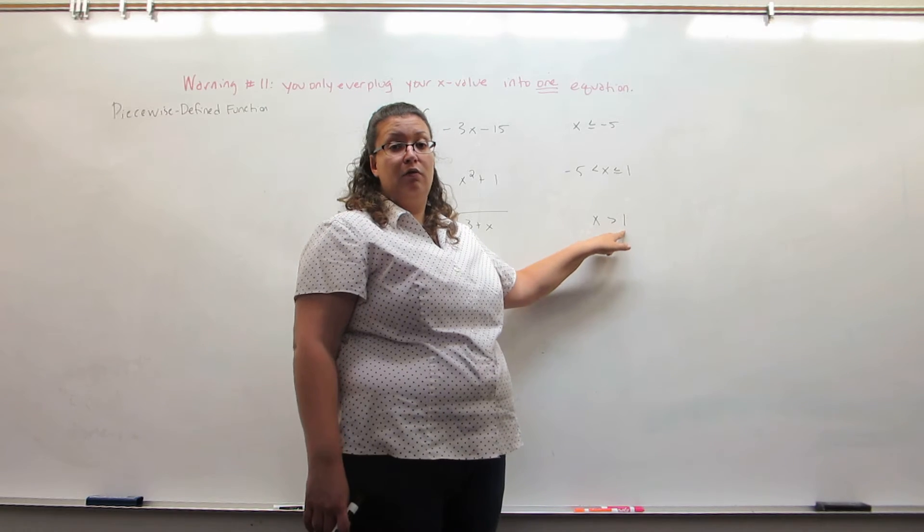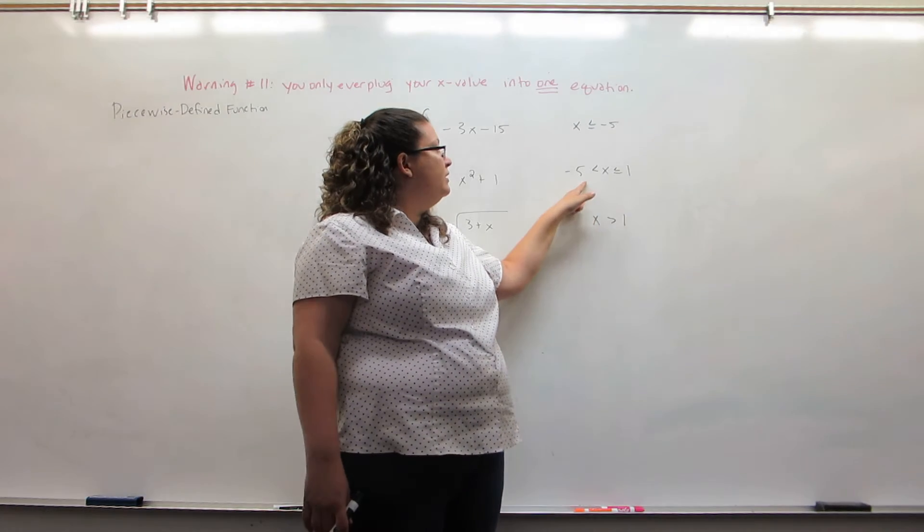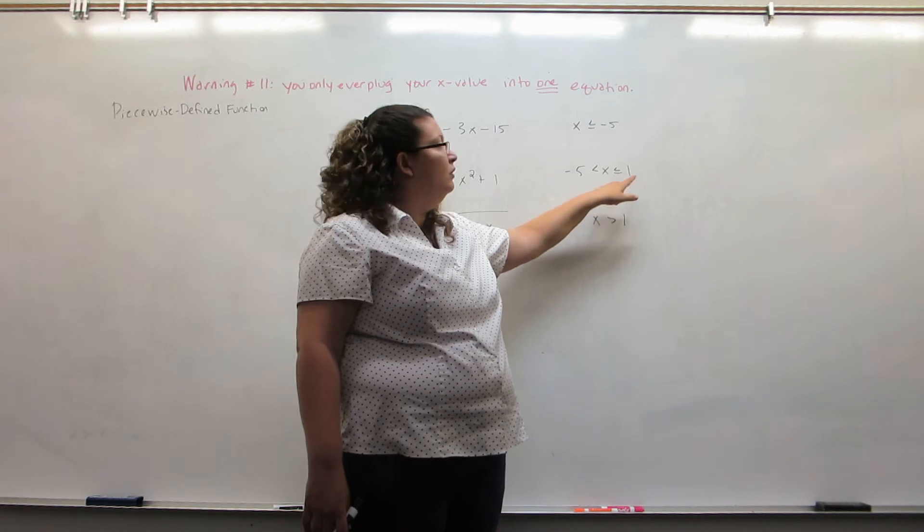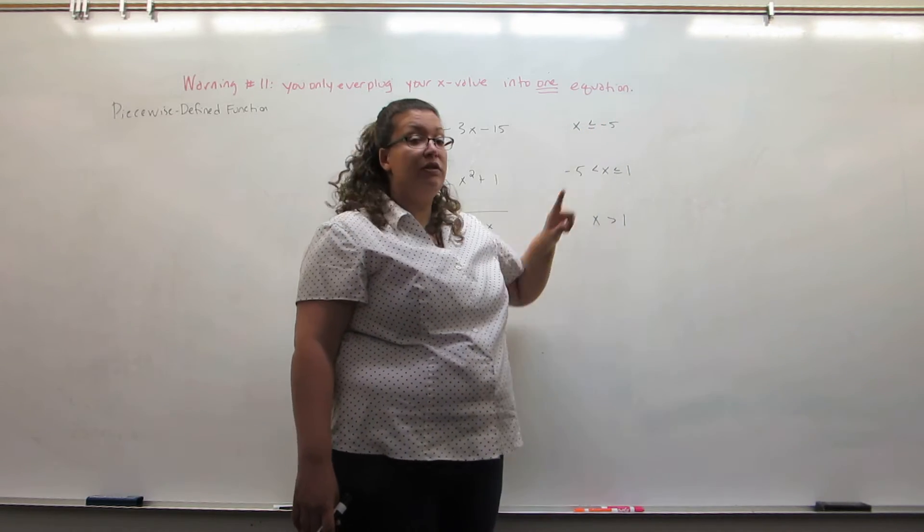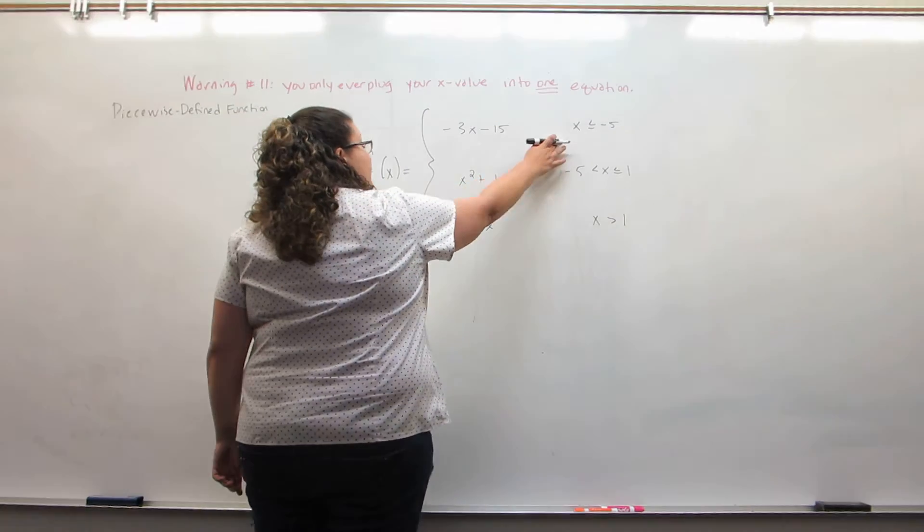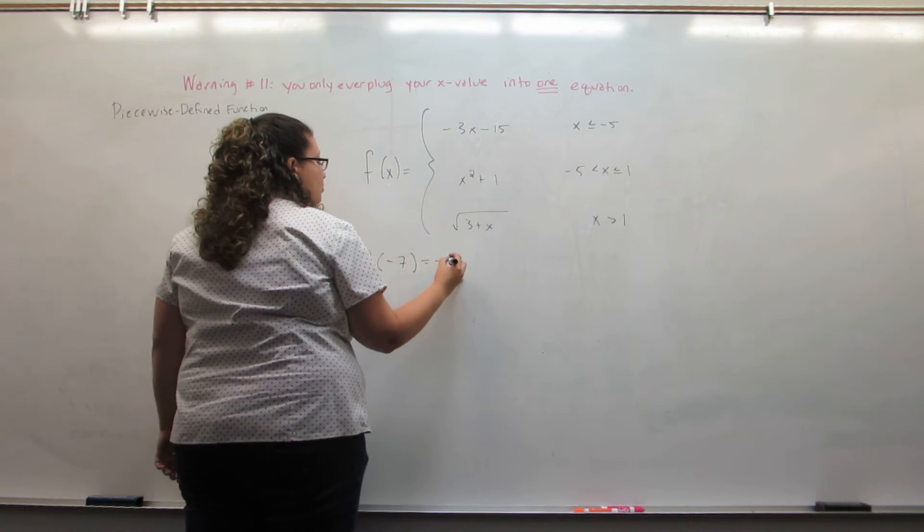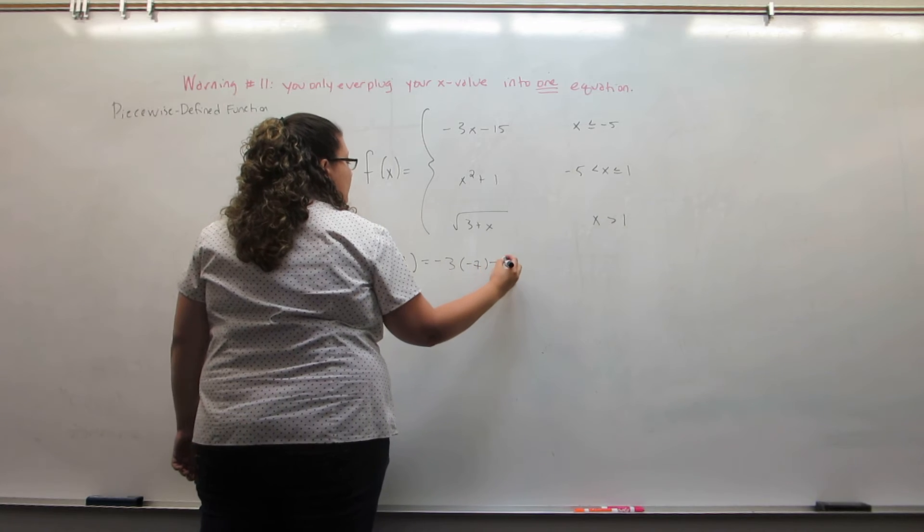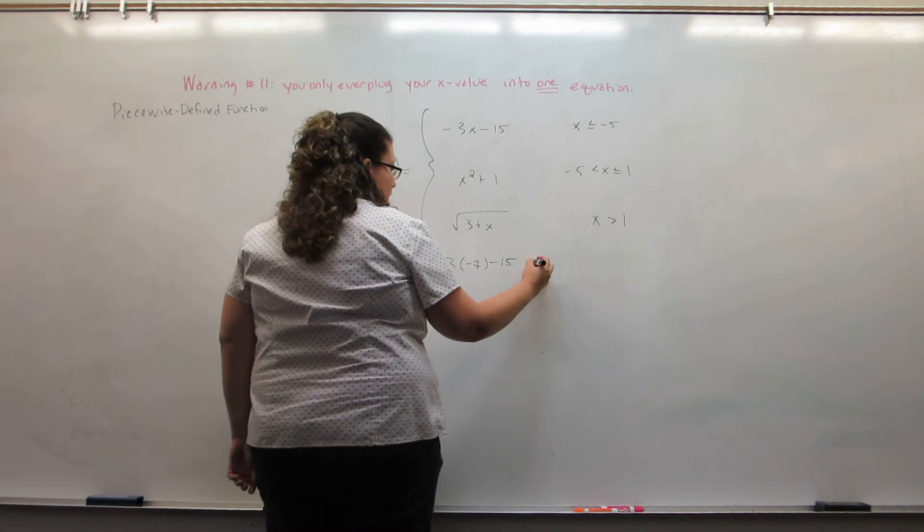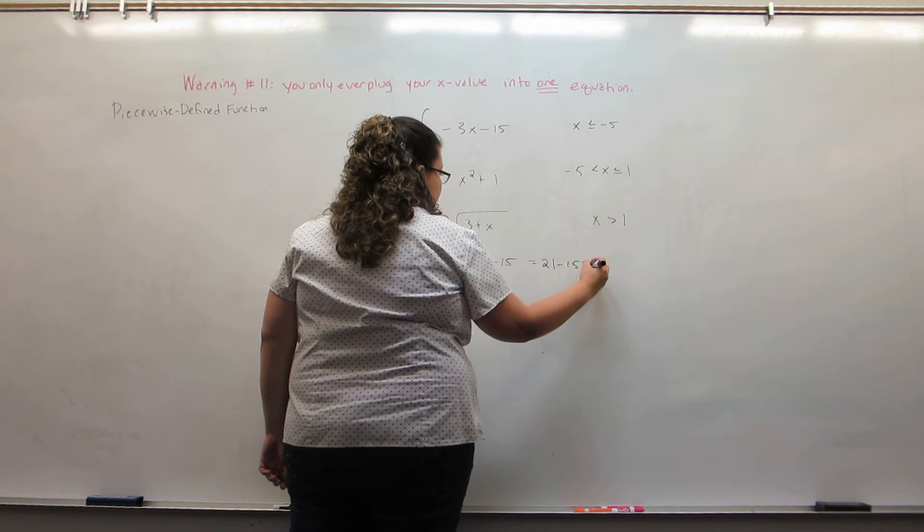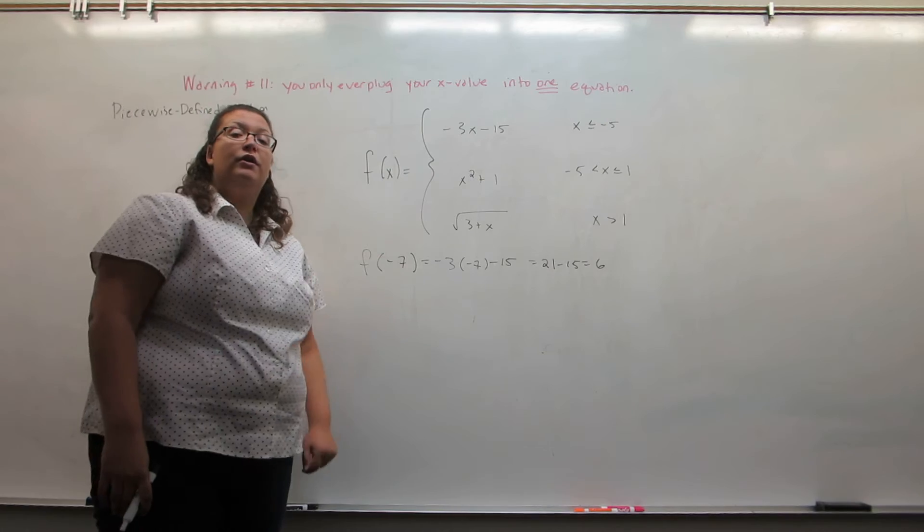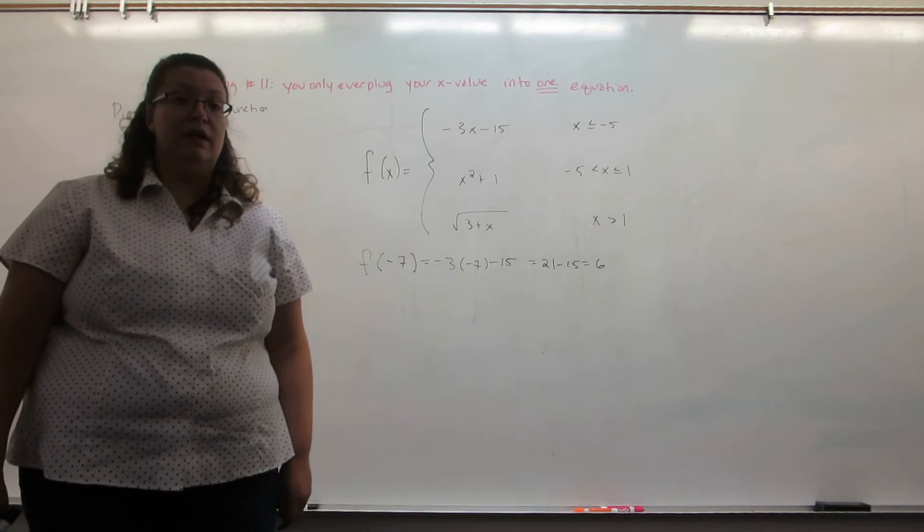Is negative 7 greater than 1? No. Is negative 5 less than negative 7 less than or equal to 1? No. Is negative 7 less than or equal to negative 5? Well, yes. Since it satisfied the first inequality, I'm going to plug negative 7 into the first equation. I work it out. I get 21 minus 15, which gives me a value of 6 for the y coordinate that goes with x equals negative 7.